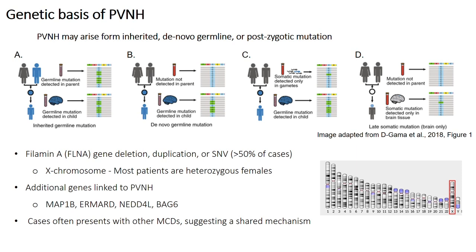People often wonder why they get this condition. It's very clear that PVNH is a genetic abnormality. It's not necessarily something you get from your parents — it could be a mutation that occurs very early on in development. So you could have either a mutation in the parent that gets passed on, a mutation that occurs in the child, a somatic mutation in the eggs or in the sperm, or somatic mutations that only occur in the brain tissue. There are a variety of different genes and abnormalities associated with PVNH that have been characterized, but for the most part we don't completely understand which genes are abnormal in which individual, and this is still an area of much study.